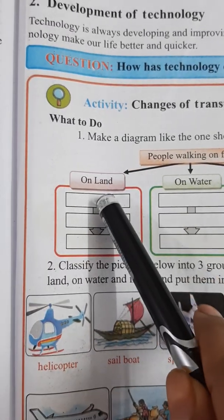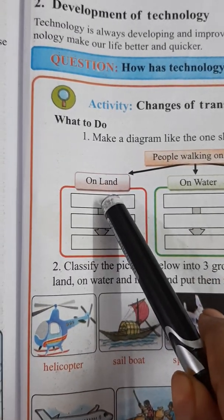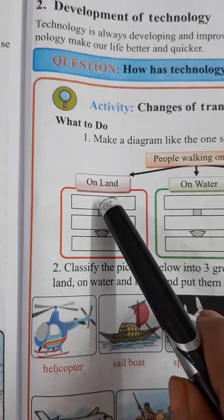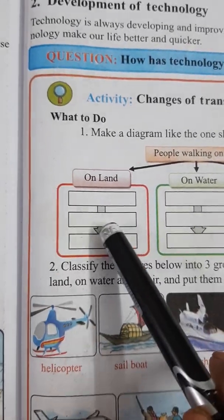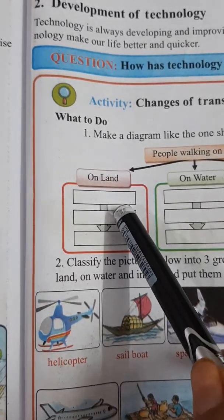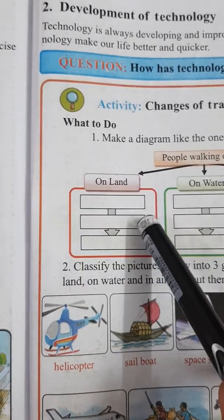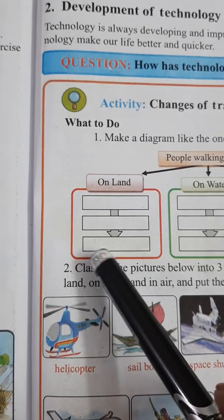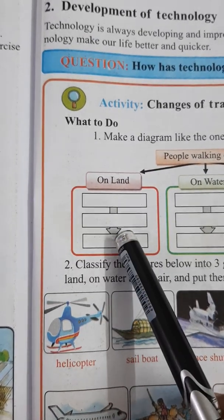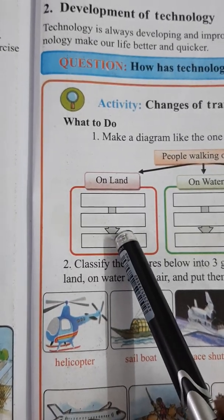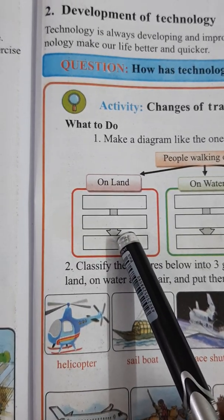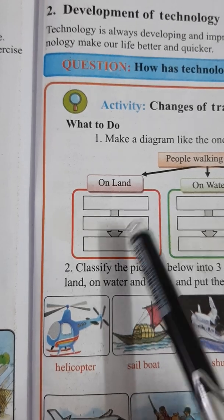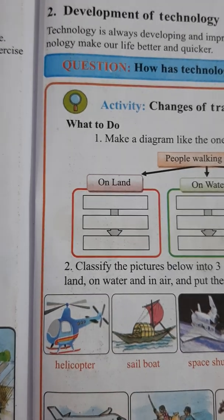...the old one. In the first column, you can write horse cart. In the second one, you can write bus. And in the third one, you can write steam tank.